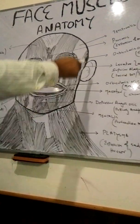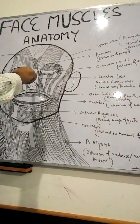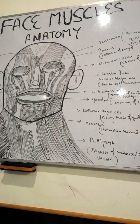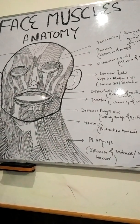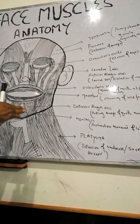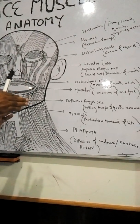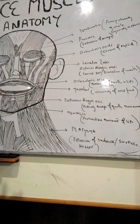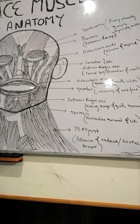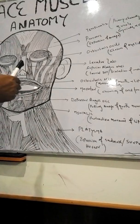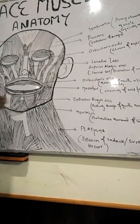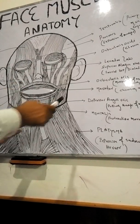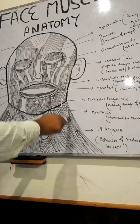So students, today we have discussed both sides of the face muscles — this is called face anatomy of muscles. We have discussed all of them one by one and their functions. In the next class we will go into more detail on the functions of these muscles. Thank you very much.